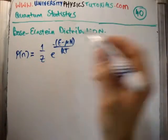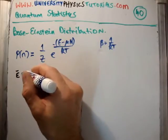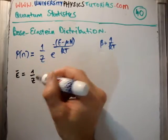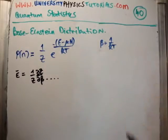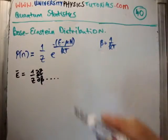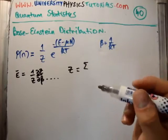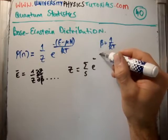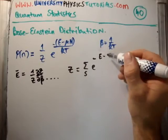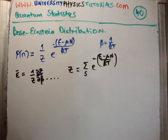So let's get the grand partition function. The reason we're going to do that is because the average energy is 1 over Z times del Z del beta — that's what we're going to use. We need to calculate the grand partition function, which is the sum of the Gibbs factors: the sum of e to the minus E minus mu times N over kT.